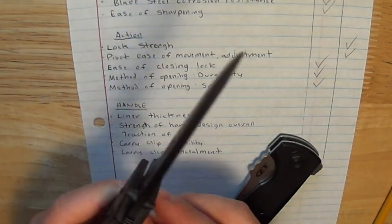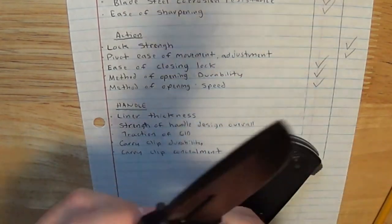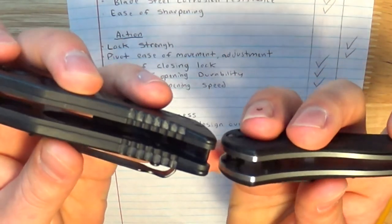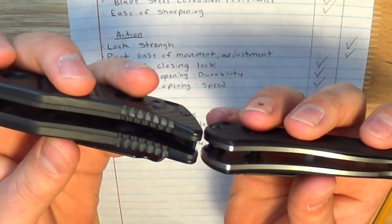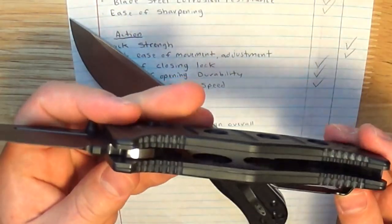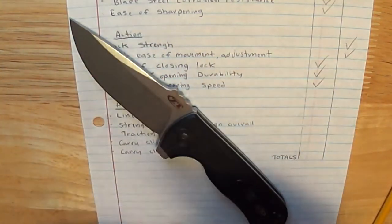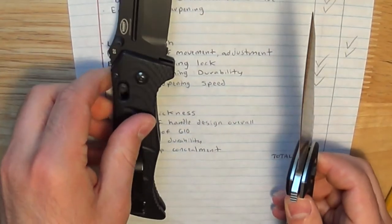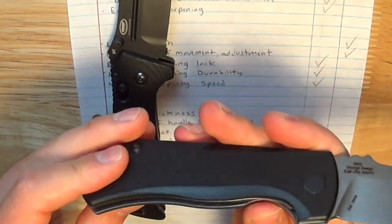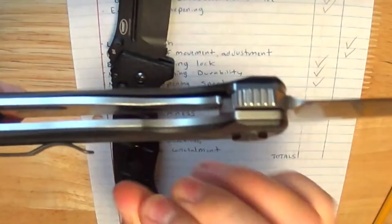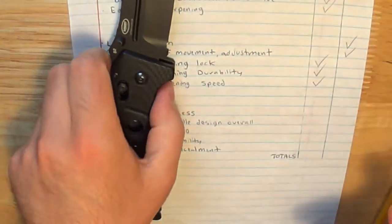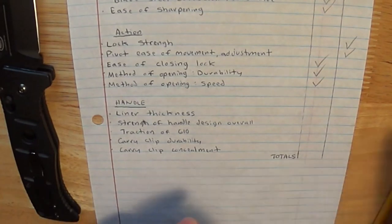In terms of handle liner thickness, as we move on to the handle category, ZT's liners are slightly thicker than Benchmade's, which considering the fact that the ZT is a liner lock, it's good to see that. It's also important to note that Benchmade skeletonized their liners, which if they did not do that, this knife would be even heavier than it already is at over seven ounces. The ZT, on the other hand, has full steel liners, which are really pretty if you can see in there and see how they're almost a mirror finish on the inside of that knife. I'm going to give liner thickness to ZT.